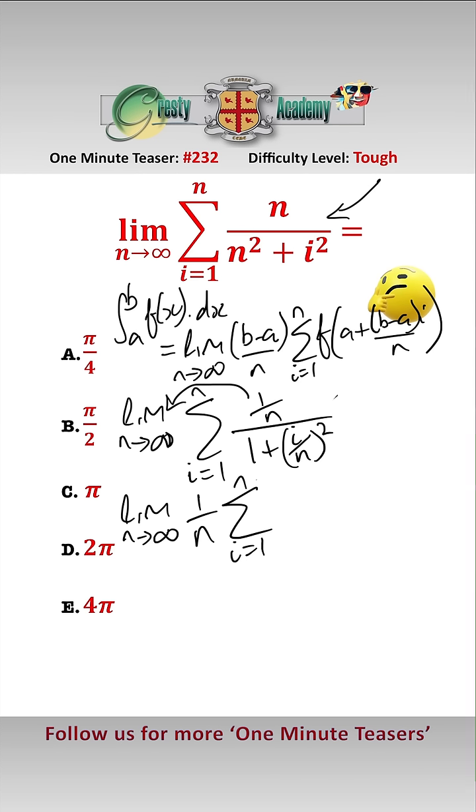Now if we compare this to the formula and let a equal 0, b equal 1, and f(x) equal 1 over (1 plus x squared), these two are identical. Therefore our limit simplifies to the integral from 0 to 1 of 1 over (1 plus x squared) dx.